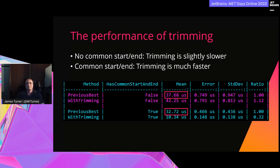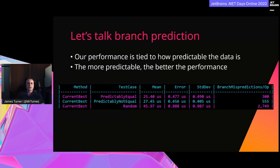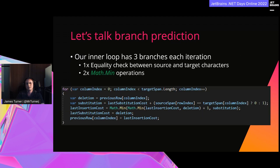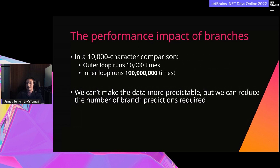Our code has a lot of branches, and longer strings means more branches to process. Using hardware counters we can see how many mispredictions each path has. In this benchmark, random data takes about 80% longer to process with around nine times the mispredictions compared to our more predictable test. In our inner loop we have three branches: one for comparing characters and two for the minimum value logic — and all three run in every iteration. For 10,000 characters, the inner loop would have to run 100 million times.